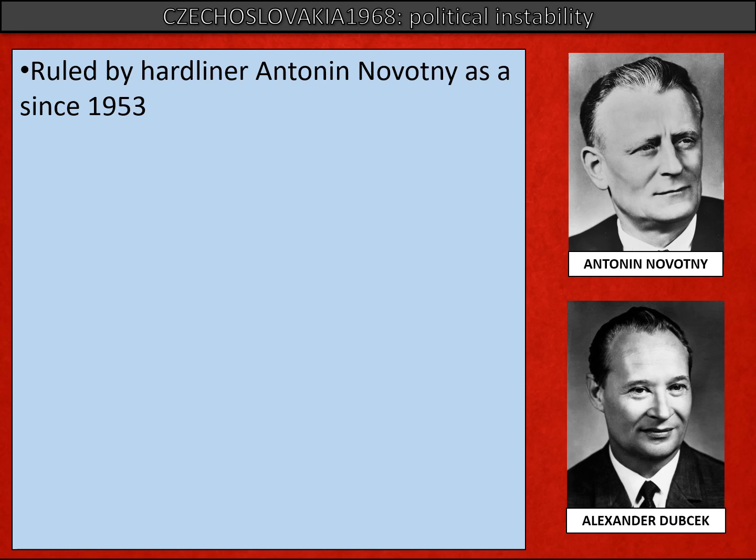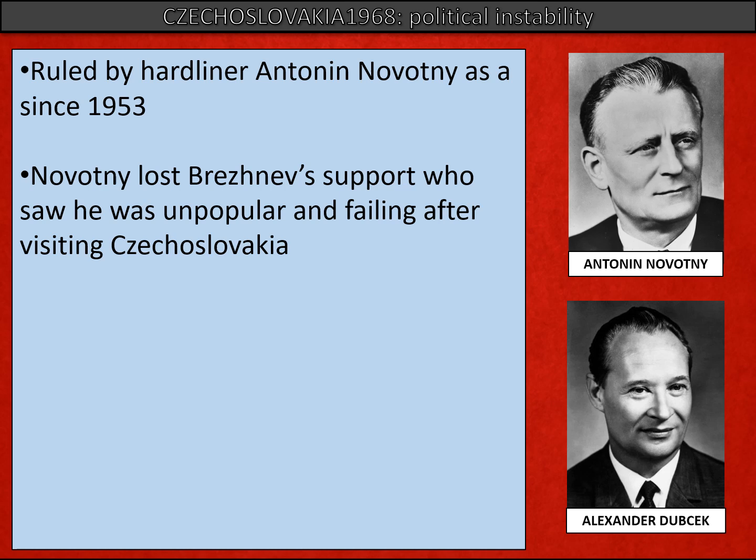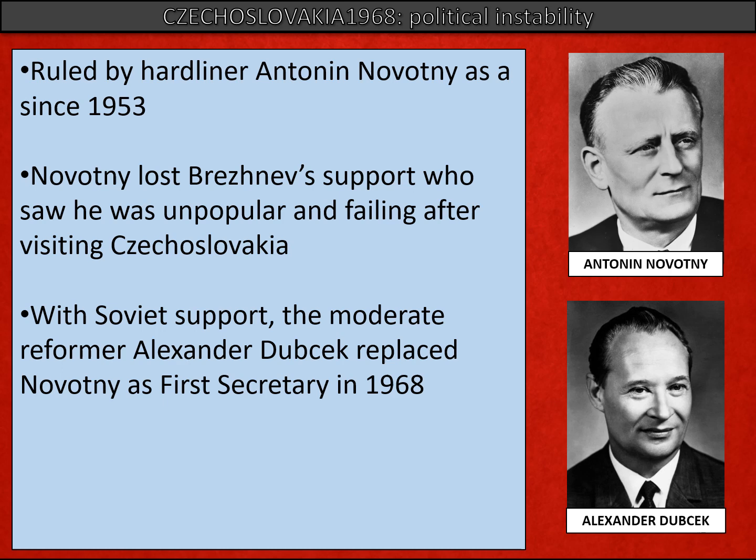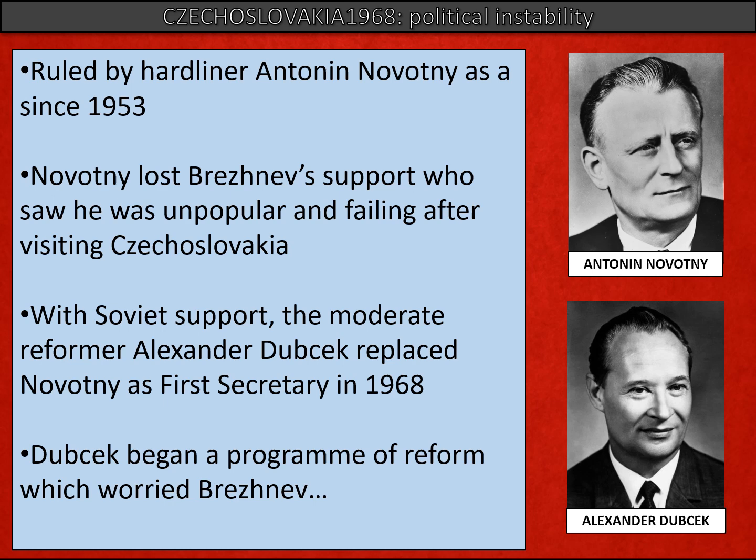Novotny had been in place as a hardline dictator since 1953. He had risen with Moscow's support but lost that support. Leonid Brezhnev had actually visited Czechoslovakia and was amazed at how unpopular Novotny's regime was. This led Brezhnev to decide that Soviet security would actually be better served if Novotny was not in place. So, with Soviet support, a moderate reformer from within the Communist Party, Alexander Dubček, replaced Novotny as First Secretary in 1968.